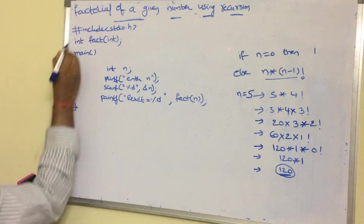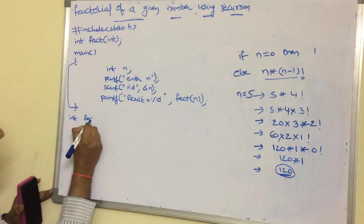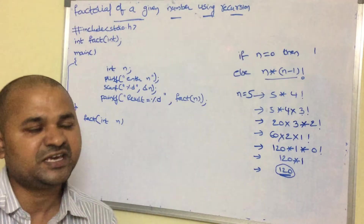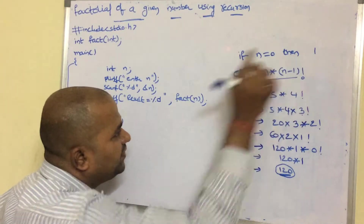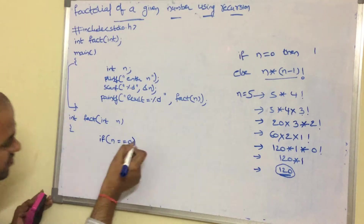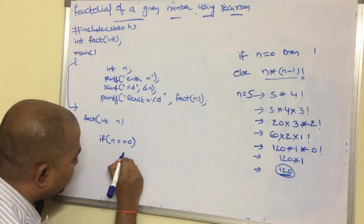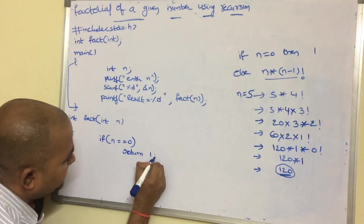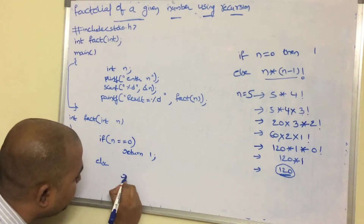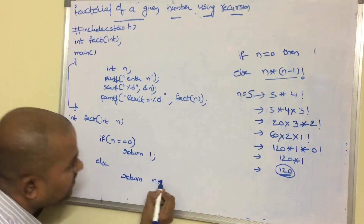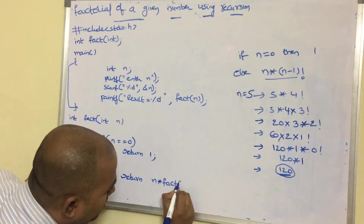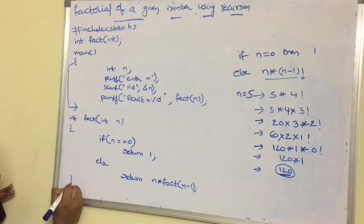Now let us define the function. The return type is int, the name of the function is fact, and the argument is int n. We already know how to calculate factorial. If n is equal to 0, we return 1. Using the formula n into (n-1) factorial, we return n * fact(n-1). Now close the fact function.